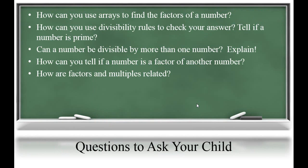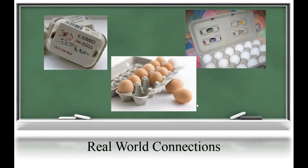Here are some questions to ask your child. How can you use a race to find factors of a number? How can you use divisibility rules to check your answer or tell if a number is prime? Can a number be divisible by more than one number — explain. How can you tell if a number is a factor of another number? And how are factors and multiples related?